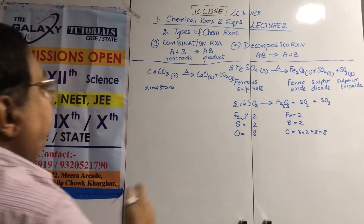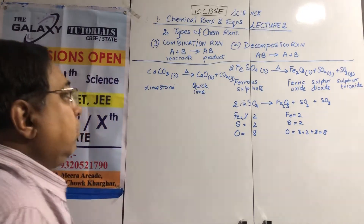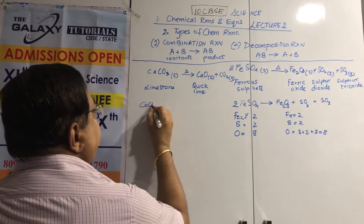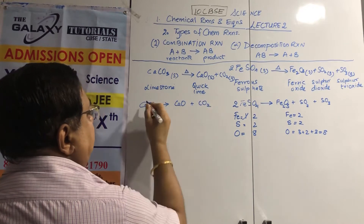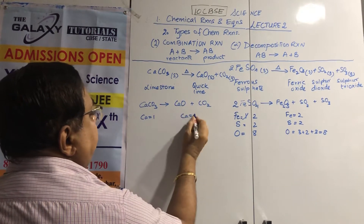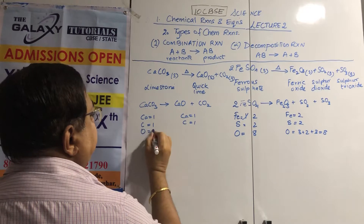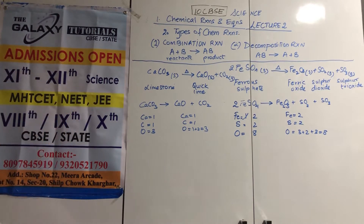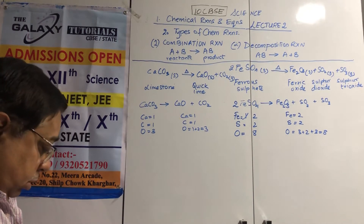Balancing is extremely simple if you know the formulas. Calcium carbonate is CaCO3, calcium oxide is CaO, carbon dioxide is CO2. Check: Ca=1 both sides, C=1 both sides, O=3 on the left, 1+2=3 on the right. The reaction is already balanced — we do not change anything.